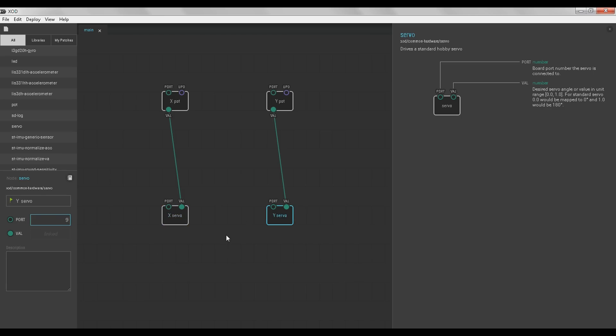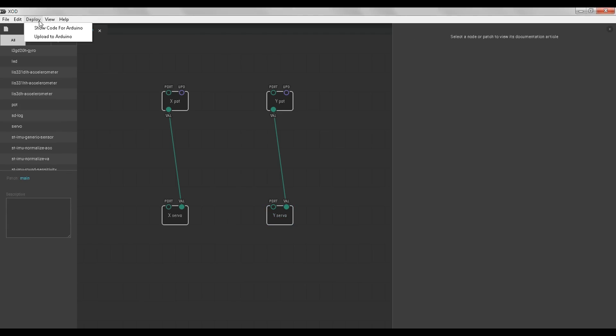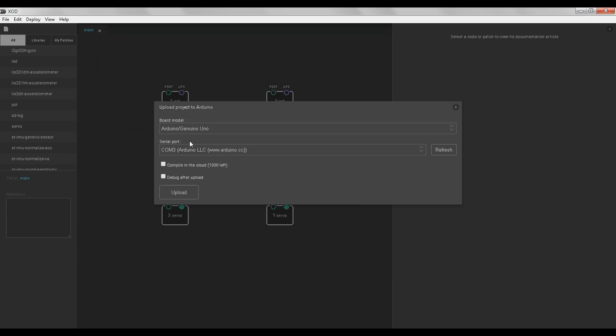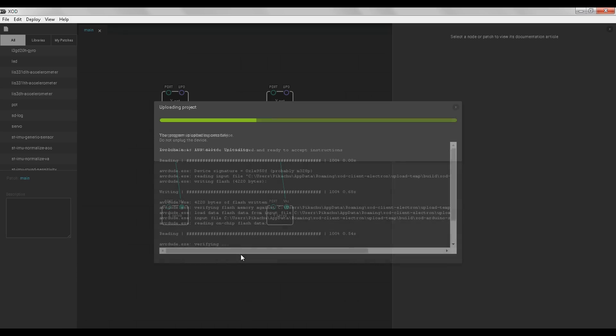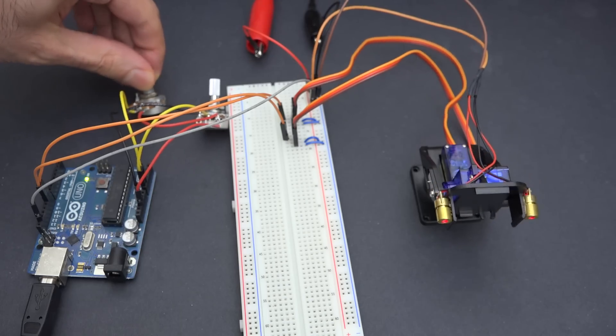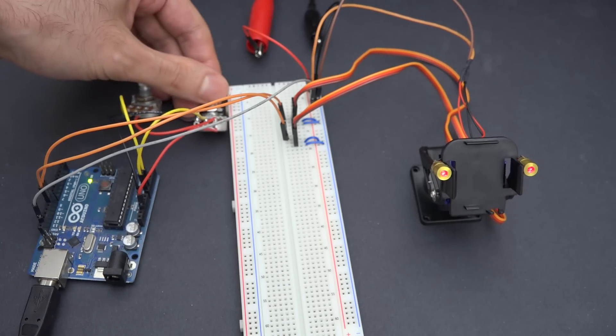And that's it! We're done! Let's go to Deploy Upload Code to Arduino. Double check your board type and com port settings are correct, and hit Upload. It'll take a few seconds to compile the visual node-based programming into native microcontroller code. And there you go! Now we can use the potentiometers to rotate the laser turret in different directions.